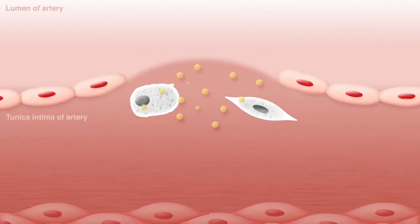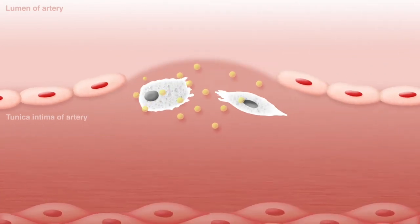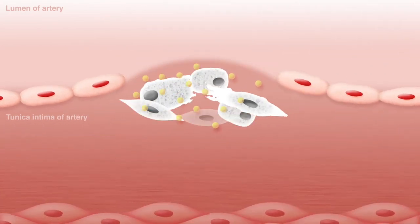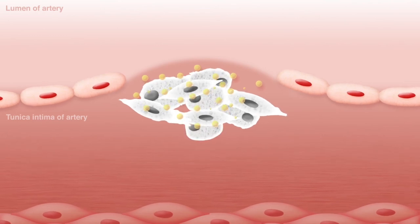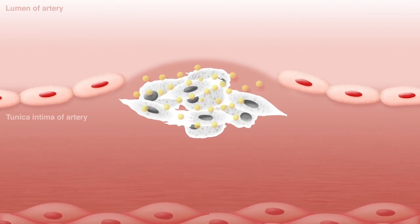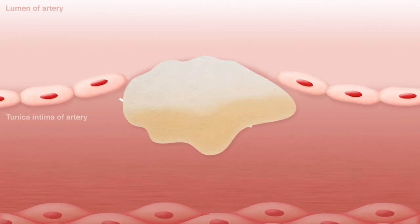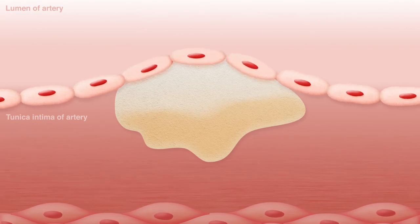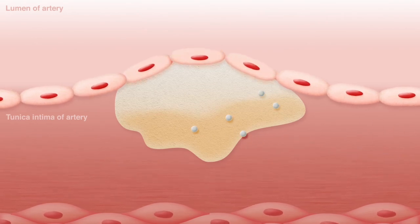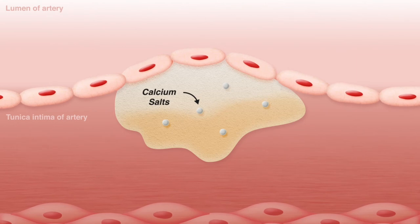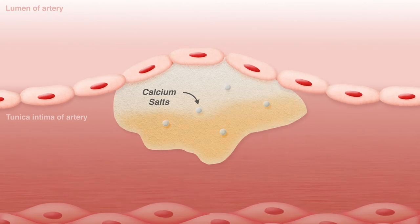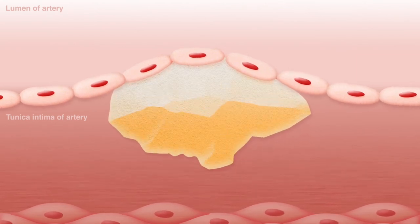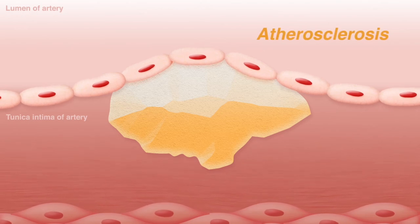Eventually, the accumulating lipid from these processes and the fragments of dead cells produce an area with a lipid core that begins to form a plaque. Endothelial cells cover the plaque. The plaque accumulates calcium salts and more dead cells over time and it will harden. This plaque in the arterial wall is atherosclerosis.